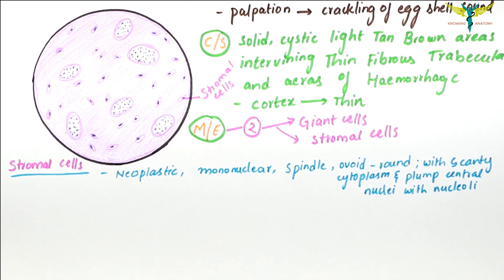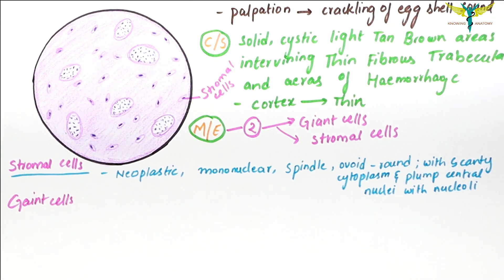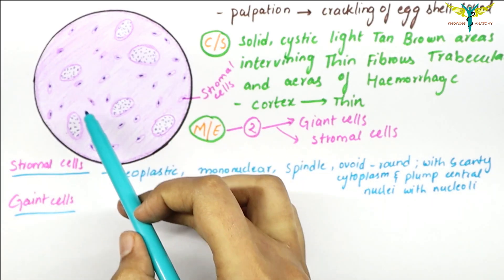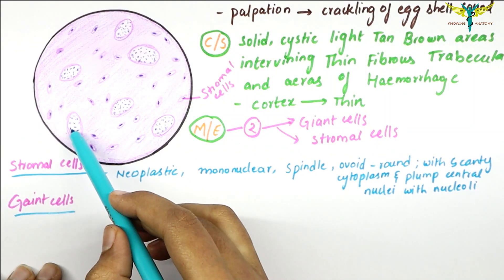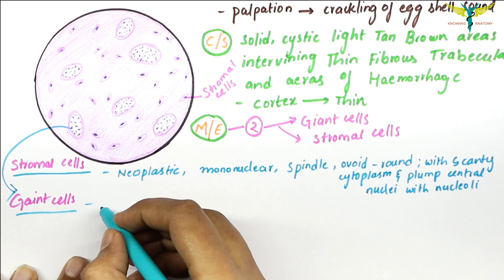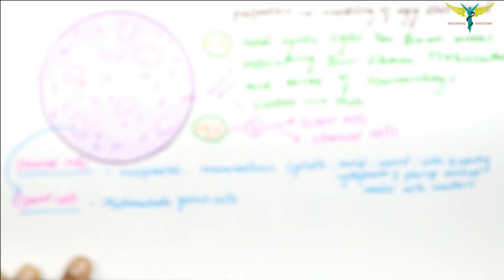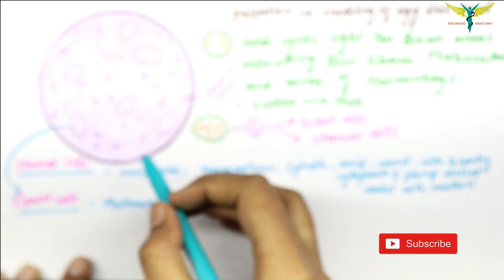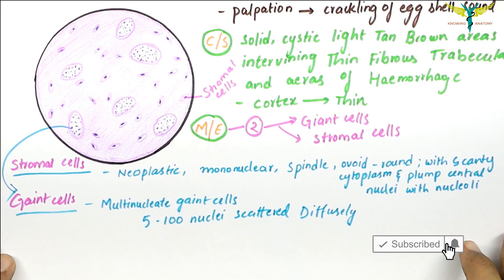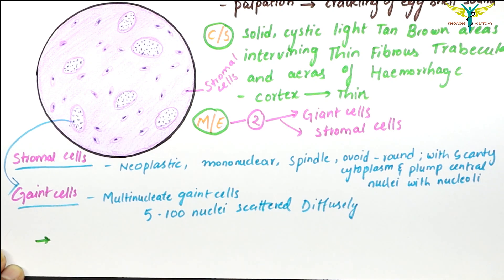The second type of cells are the giant cells. Due to the presence of these cells, the tumor has been named the giant cell tumor. These giant cells are present between the stromal cells. The giant cells present in this tumor are multinucleate giant cells with five to one hundred nuclei, scattered diffusely all over the tumor.